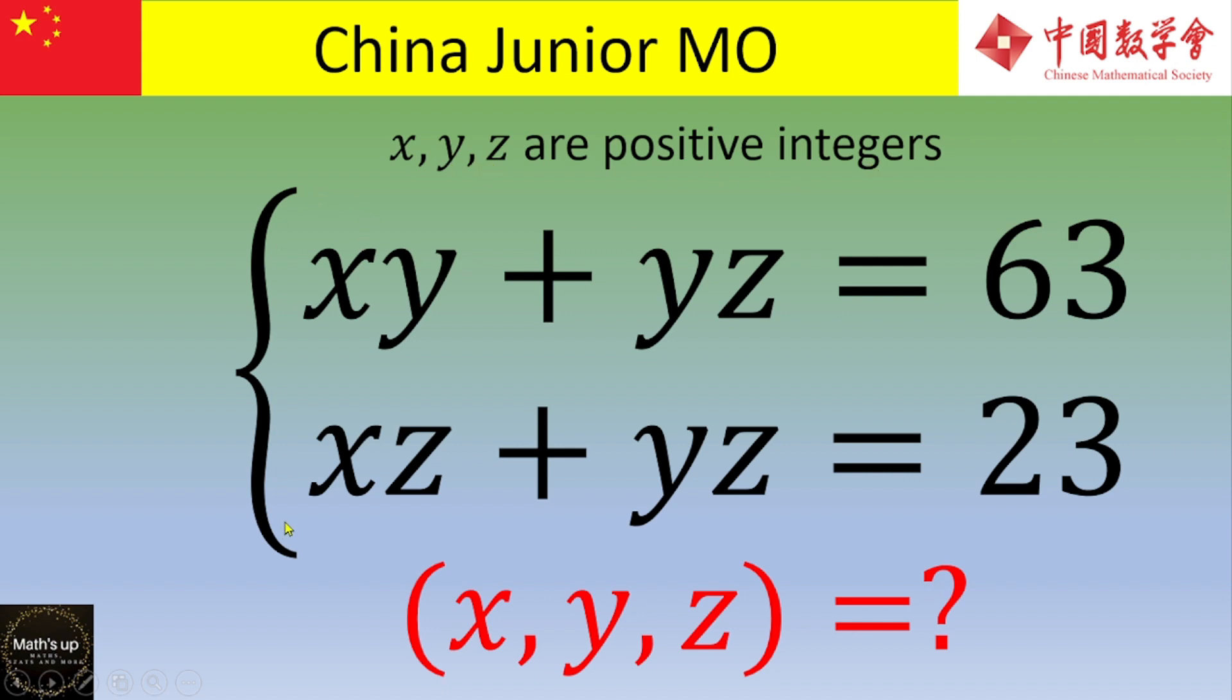So you want to solve the system. xy plus yz equals 63. And the second equation is xz plus yz equals 23. And you want to find out the values of x, y and z verifying the system.